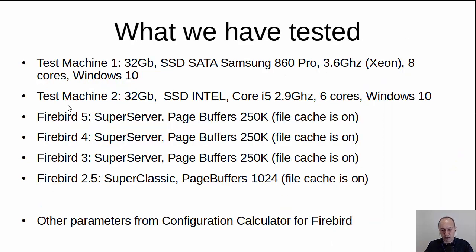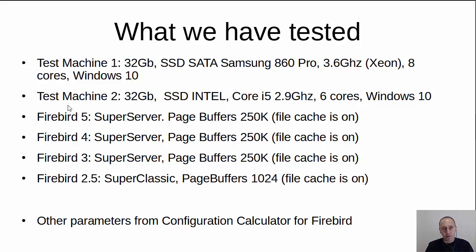We have two test machines: one is a 32 GB Xeon at 3.6 GHz, 8 cores with an SSD SATA Samsung; and another is a Core i5 with 6 cores, 32 GB of RAM and an Intel SSD — both running on Windows 10. We tested four versions of Firebird: 5.5 SuperServer, 5.4 SuperServer, 5.3 SuperServer, and 2.5 SuperClassic.